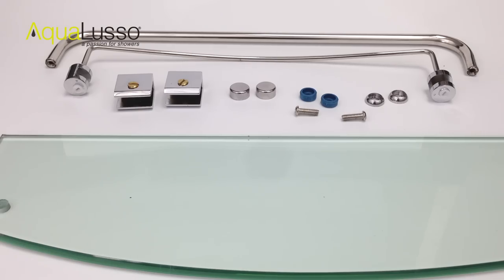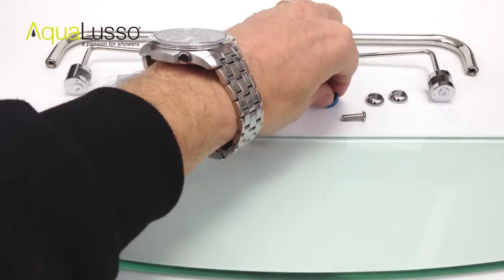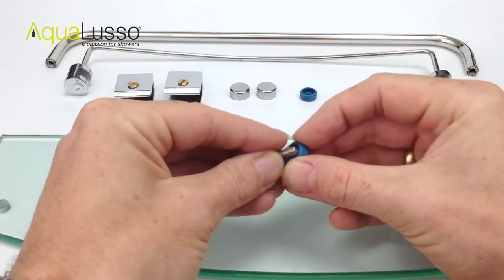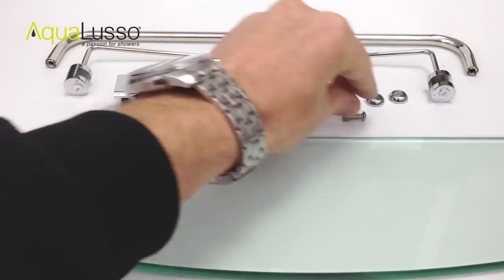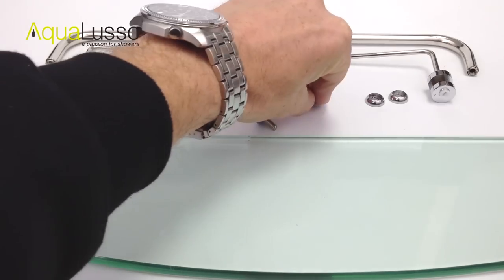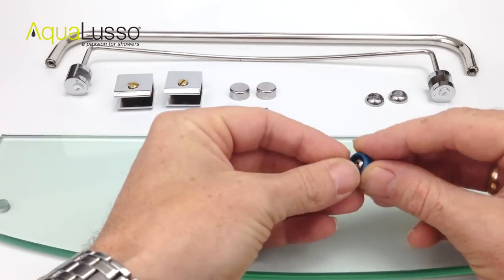So now onto the assembly. Take one of the bolts and fit it through the blue little washer and do the same with the other one.